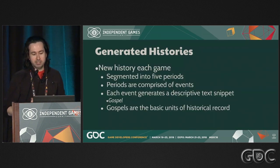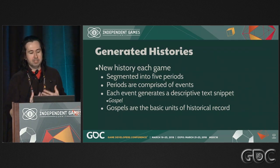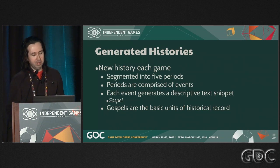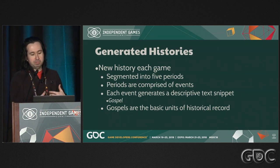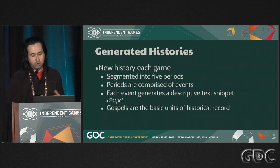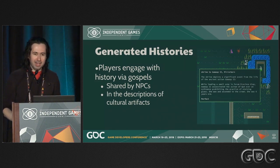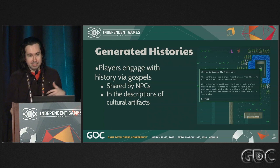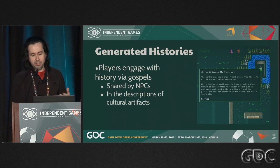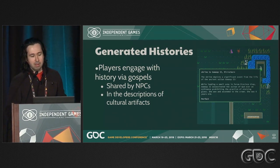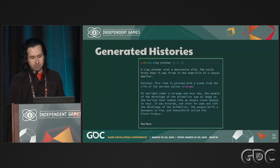Every time you start a new game of Caves of Qud, we generate a new history. The history is segmented into five distinct periods, each centered around one of these sultans. The periods are comprised of historical events, and each historical event generates a descriptive text snippet called a gospel. Gospels are the basic units of historical record in Qud. Players engage with them either through NPCs sharing them in dialogue, or through the descriptions of cultural artifacts — things like shrines, painted objects, engraved objects.